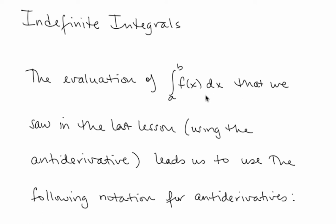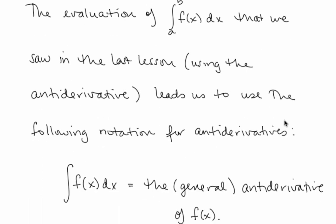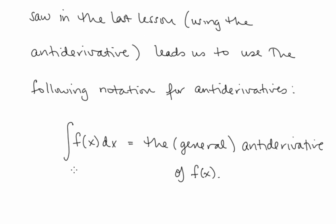The evaluation of the definite integral that we saw in the last lesson using the antiderivative leads us to use the following notation for antiderivatives. Here we have the same elongated s integral symbol, but now without bounds. There are no numbers a and b here. And this notation means the general antiderivative of f. So it's just a new notation that we have to symbolize the antiderivative of a function.